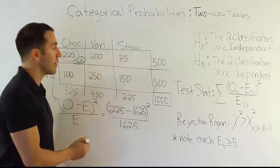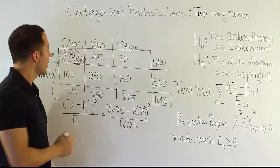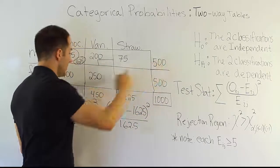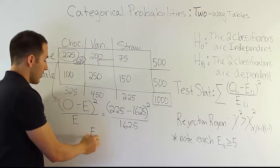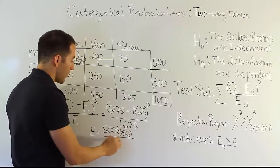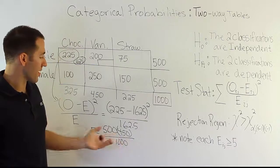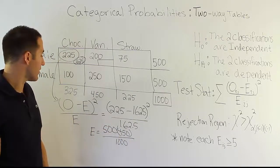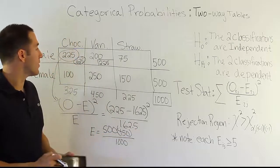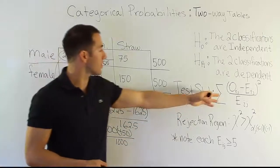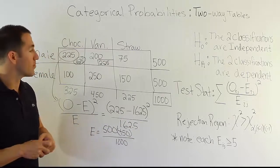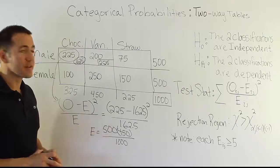For another cell, the expected value would be 500 times 450 divided by 1,000 — again 500 over 1,000 is one half, so one half times 450 equals 225. Once you have all the expected values, you fill in all the fractions, do the arithmetic, add the results together, and get your test statistic. We'll go through all the mechanics and details in the problem videos, where you'll be able to practice along.